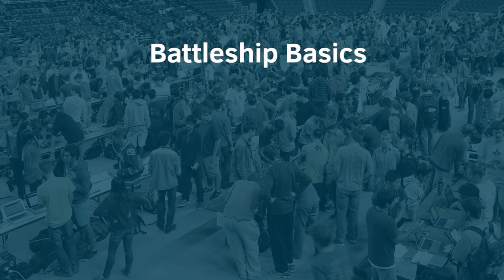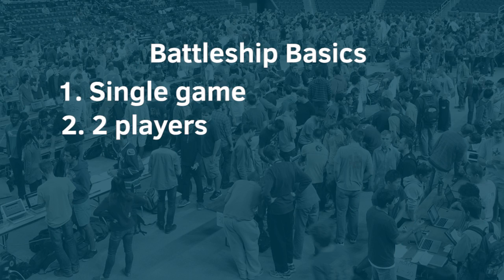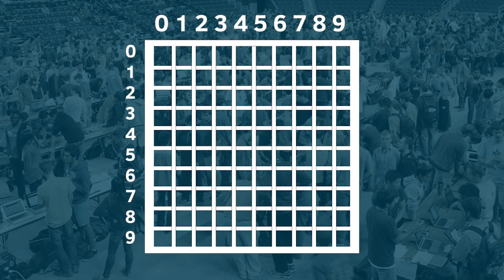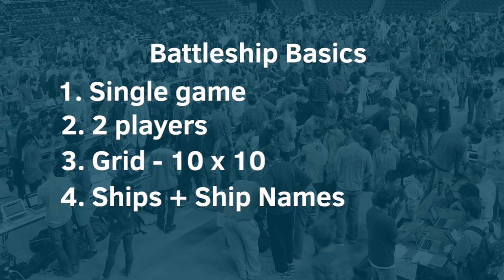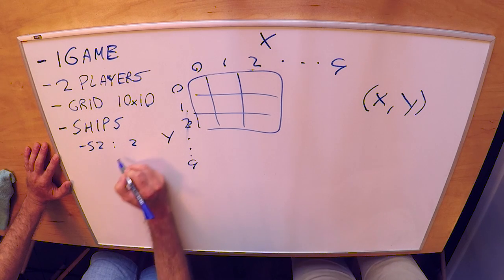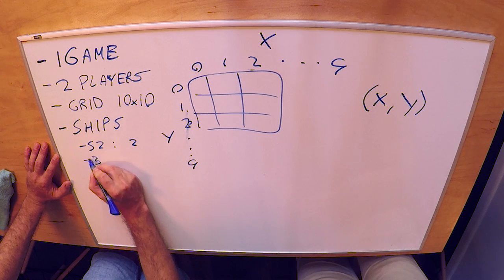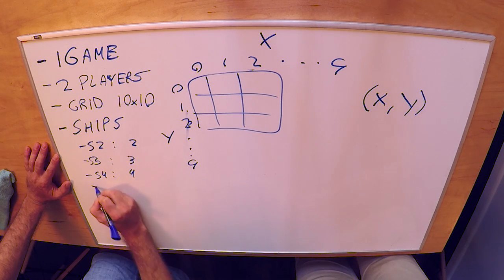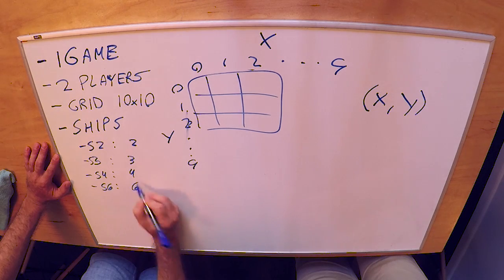Basically what we're gonna do is we're gonna try to program a single game of Battleship. Each game will have about two players. Each player is going to have a grid. The grid is typically 10 by 10. Let's go ahead and make up some ships and some ship names. We'll call them S2 and that has a length of two, S3 and that has a length of three, S4 is four and S6 is six.